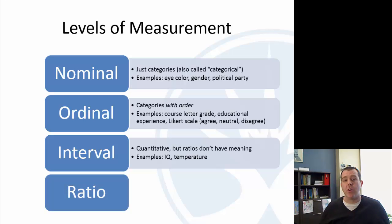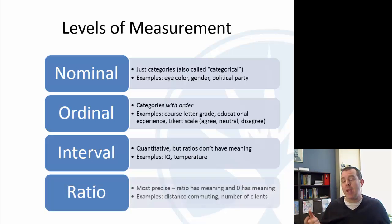And the last one then is a ratio where those ratios now have meanings. So like distance is a good one. Distance, you commute to school or commute to work. If someone drives twice as far, then they literally do drive twice as far. If you're looking at a business and you have a number of clients, if somebody has four times as many clients as somebody else, then that ratio means something.